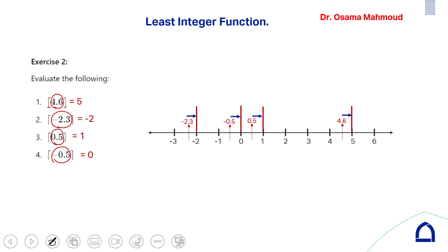To make this easier, use the real number line and find the integer to the right of the given value. The integer to the right is the next larger integer — that is the least integer function value. For example, the integer bigger than a value near 0 is 0; the integer bigger than 4.something is 5.